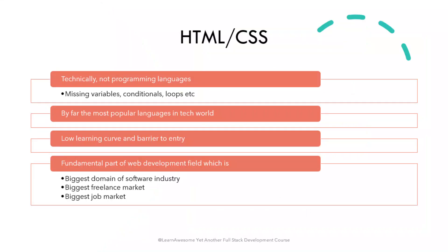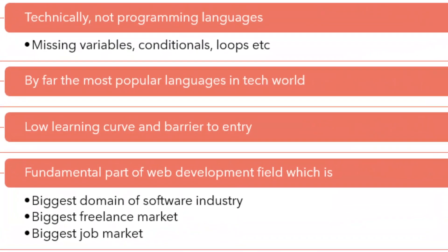The course will start with HTML, which technically is not a programming language as it has no variables, conditional logic, loops, etc., which are required to classify it as a programming language. But HTML, coupled with CSS and JavaScript, is by far the most popular language in the tech world. You can do your own research to discover that HTML along with CSS is one of the easiest to learn compared to other programming languages.